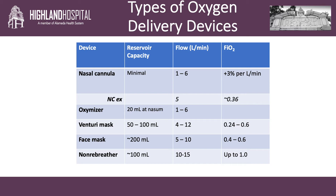Nasal cannula — we're very familiar with this device. The reservoir capacity is minimal. The flow rate is about 1 to 6 liters per minute, and the FiO2 is calculated by adding about 3% FiO2 per liter flow per minute. So for example, if a patient is on 5 liters per minute of nasal cannula, ambient air has an FiO2 of 21%. Five liters times 3% FiO2 per liter equals an additional 15% FiO2, so 15 plus 21 equals an FiO2 of about 36%.